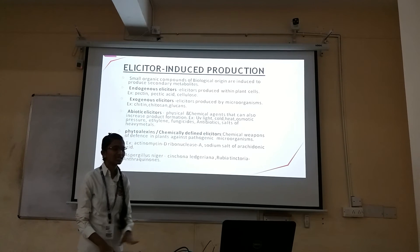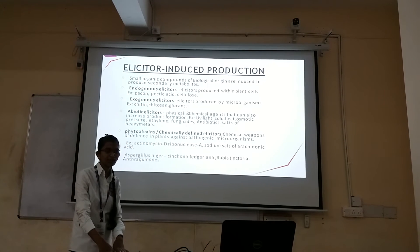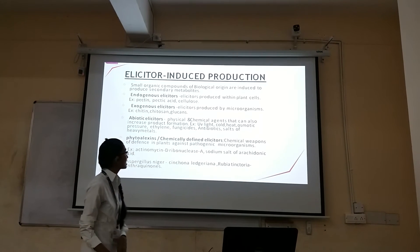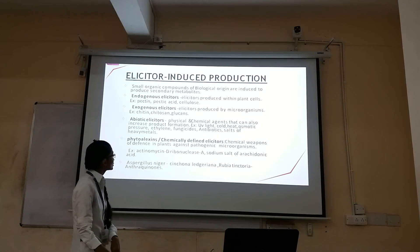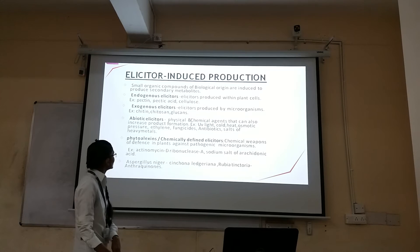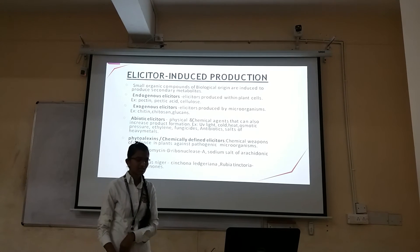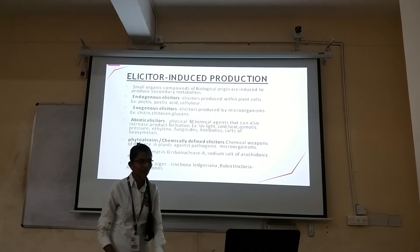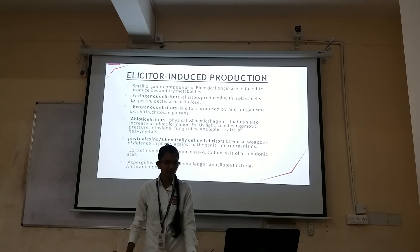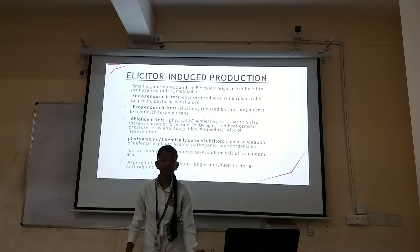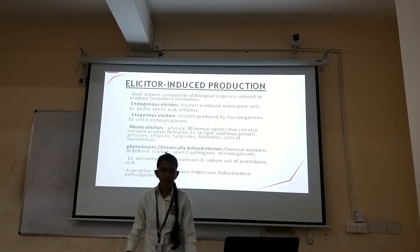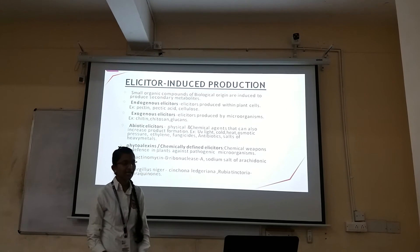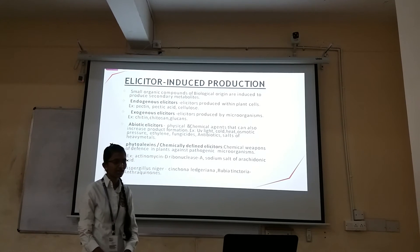Endogenous elicitors include pectin, pectic acid, and cellulose. Exogenous elicitors include chitin, chitosan, and glucans. There are also abiotic elicitors, which are produced from abiotic factors — for example, UV light, cold, heat, osmotic pressure, ethylene, and fungicides. These can also be produced by certain chemicals.